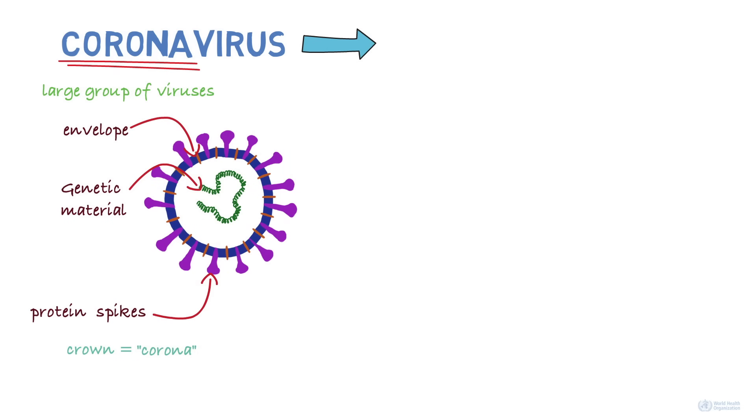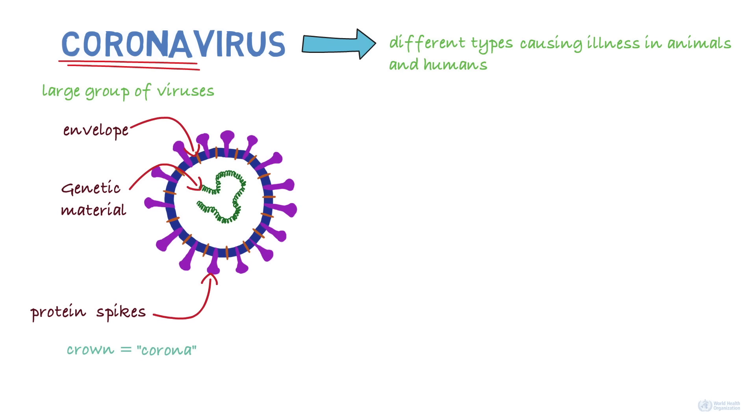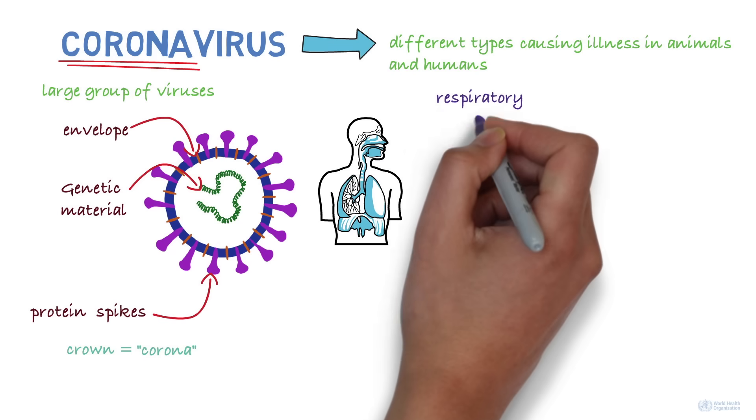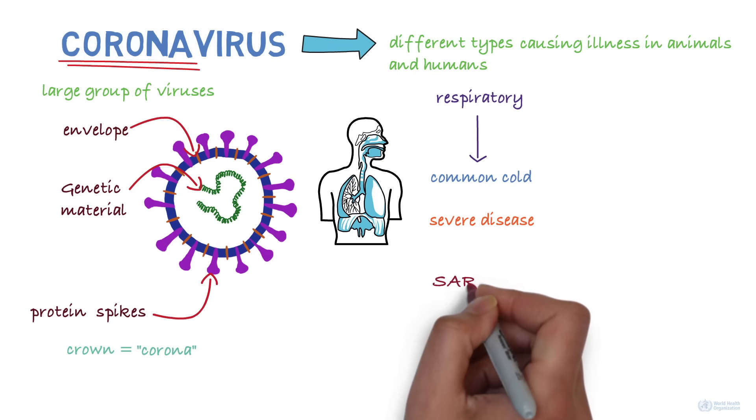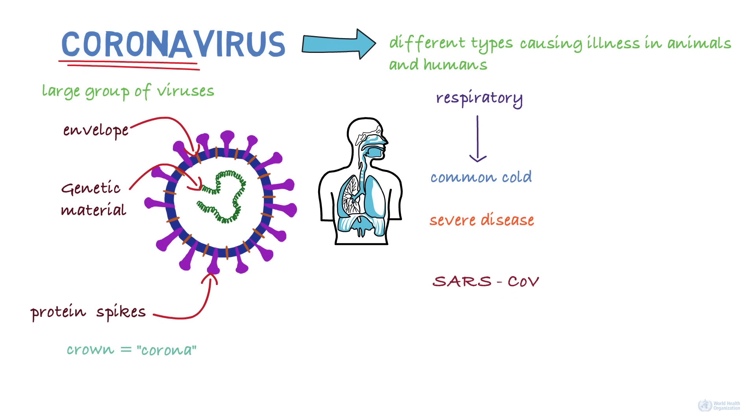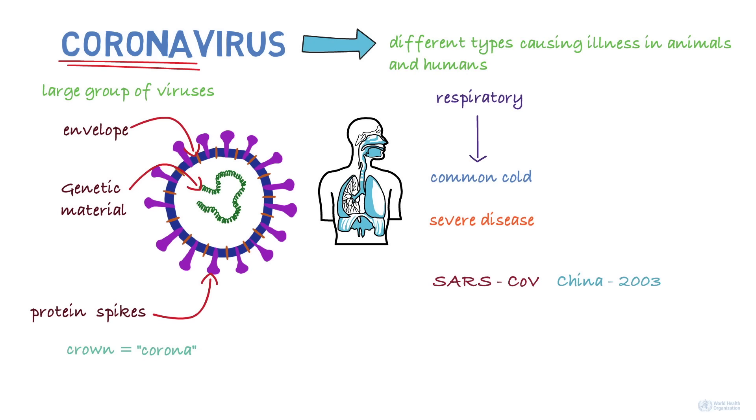There are different types of coronaviruses that cause illness in animals and humans. In humans, coronaviruses can cause respiratory infections ranging from the common cold to more severe diseases. These include the severe acute respiratory syndrome coronavirus first identified in China in 2003, the Middle East respiratory syndrome coronavirus that was first identified in Saudi Arabia in 2012, and SARS-CoV-2, the name of the virus that causes COVID-19 that was first reported in December 2019.